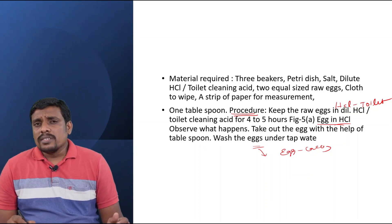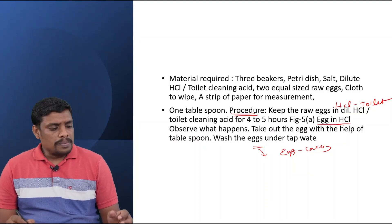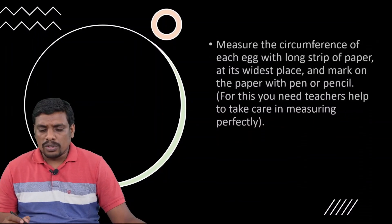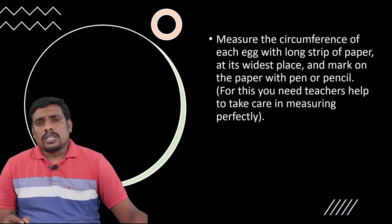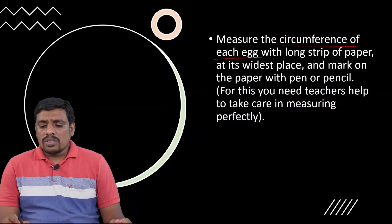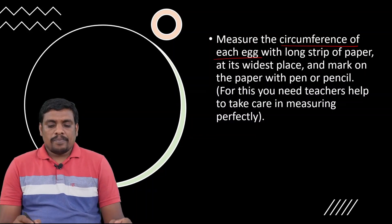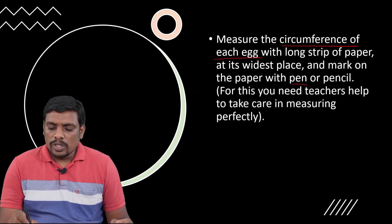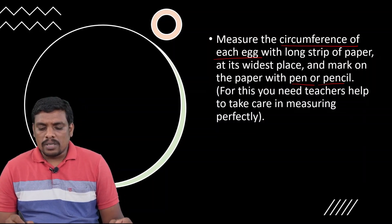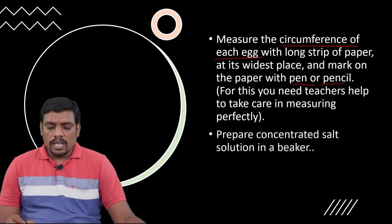Take out these eggs from the HCl with the help of a tablespoon and wash them under tap water. After washing, take out these eggs and measure the circumference of each egg with a long strip of paper at its widest place. Mark on the paper with pen or pencil.